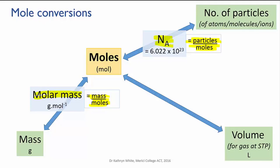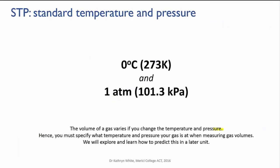Before I show you how that works though, I need to explain this little acronym here, STP. The volume of a gas changes if you change its temperature or pressure. So, whenever you're stating a gas volume, you have to say what the temperature and the pressure were when you measured that volume.